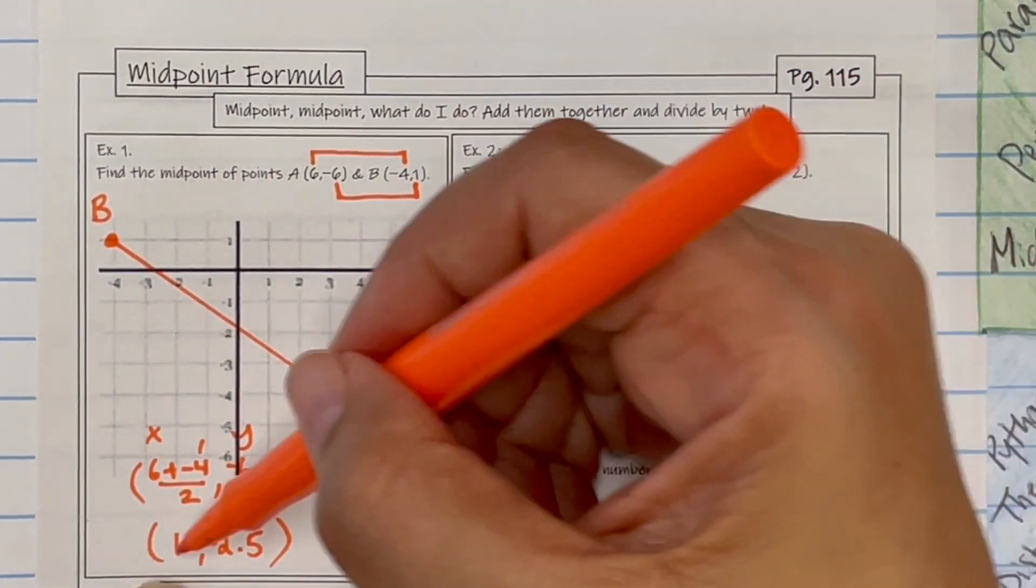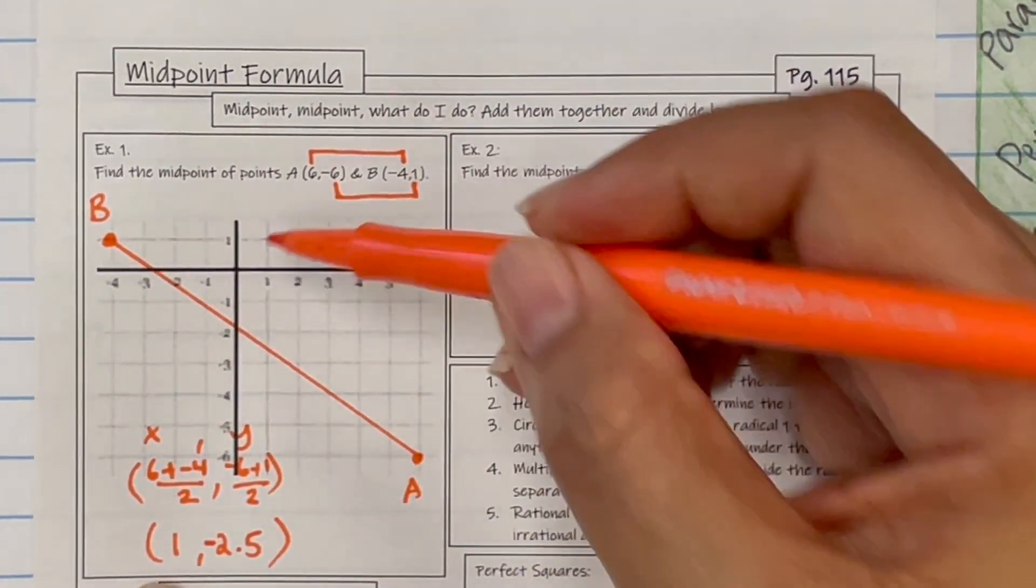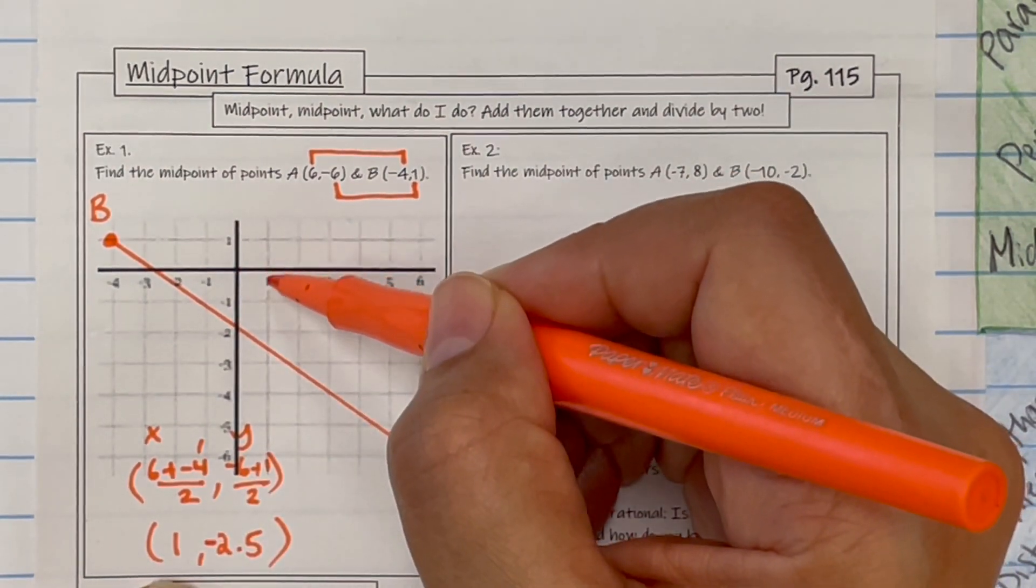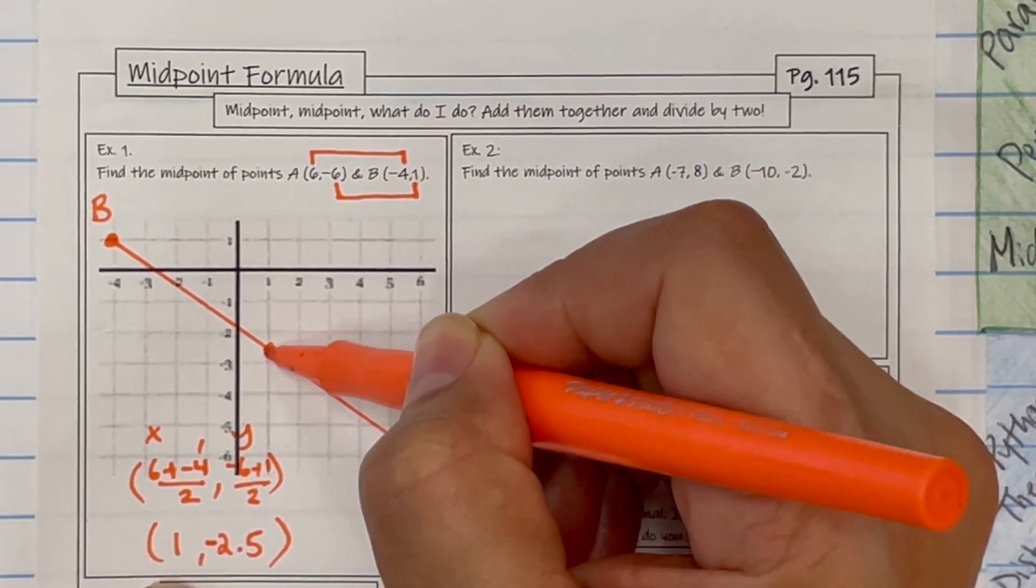So if I did this correctly, when I plot this point, it should be in the middle. So 1 and negative 2.5. Look at Ms. Angley go.